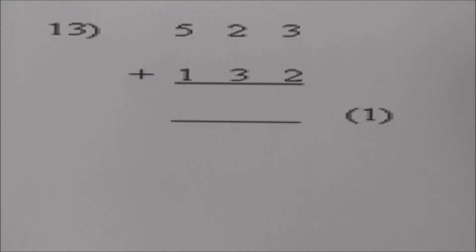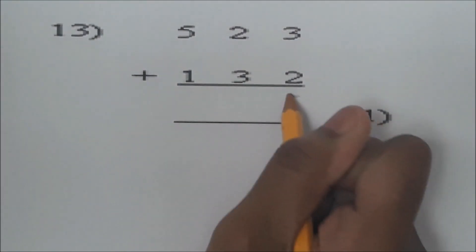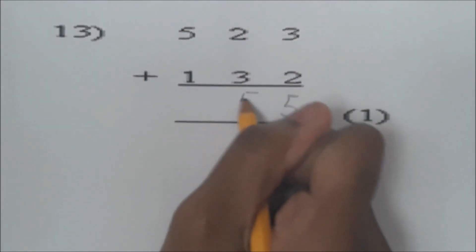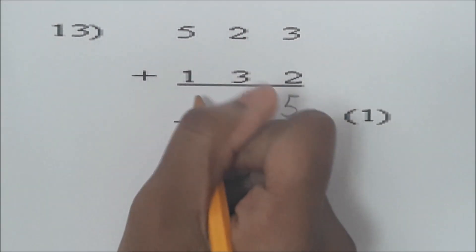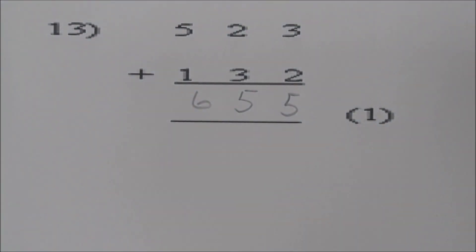We're at number 13. Tell us the numbers you're adding first: 523 plus 132. 3 plus 2 is 5. 2 plus 3 is 5. 5 plus 1 is 6. The answer is 655. Very good.